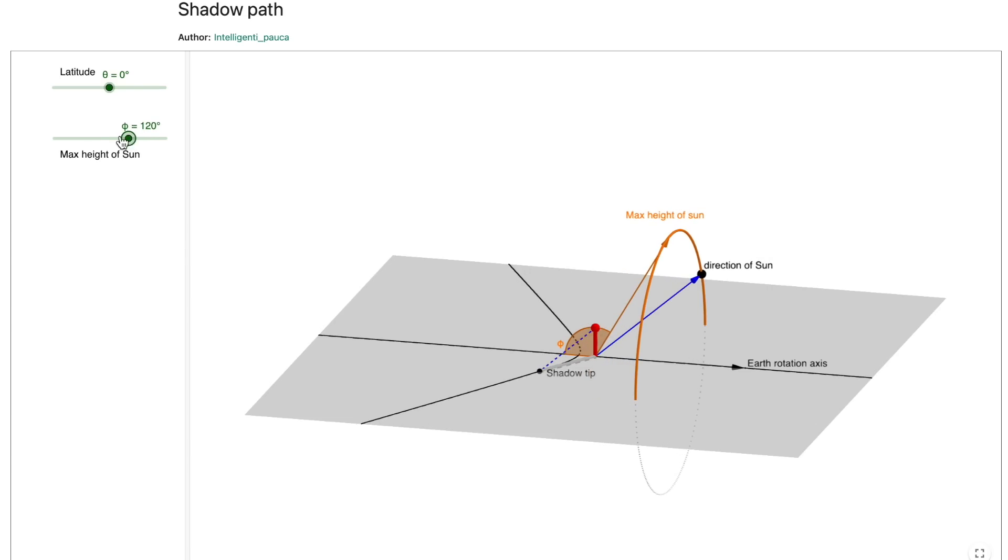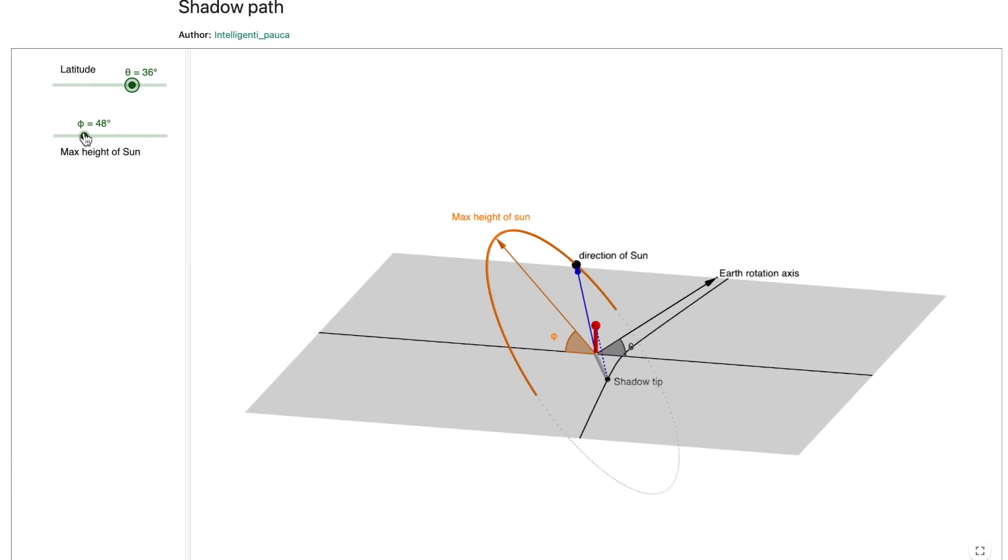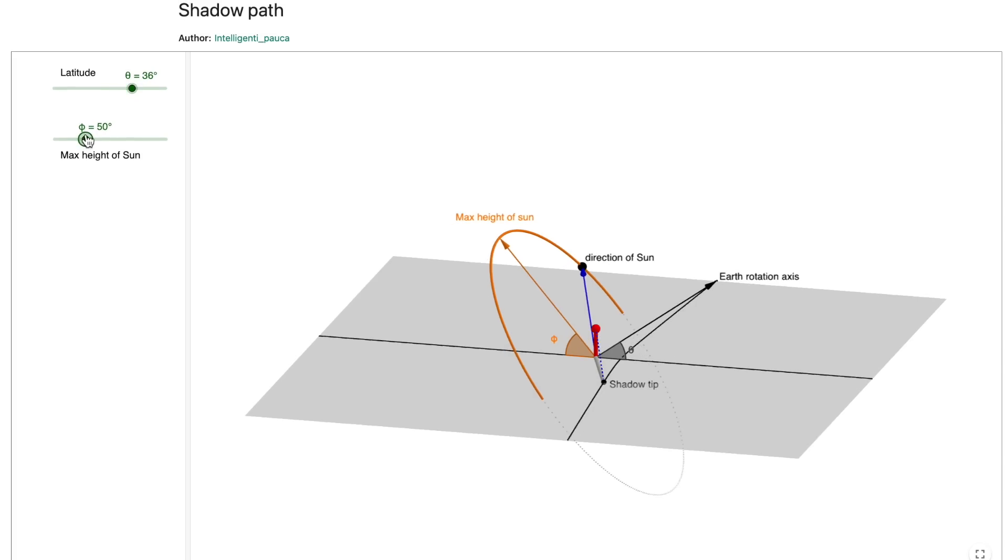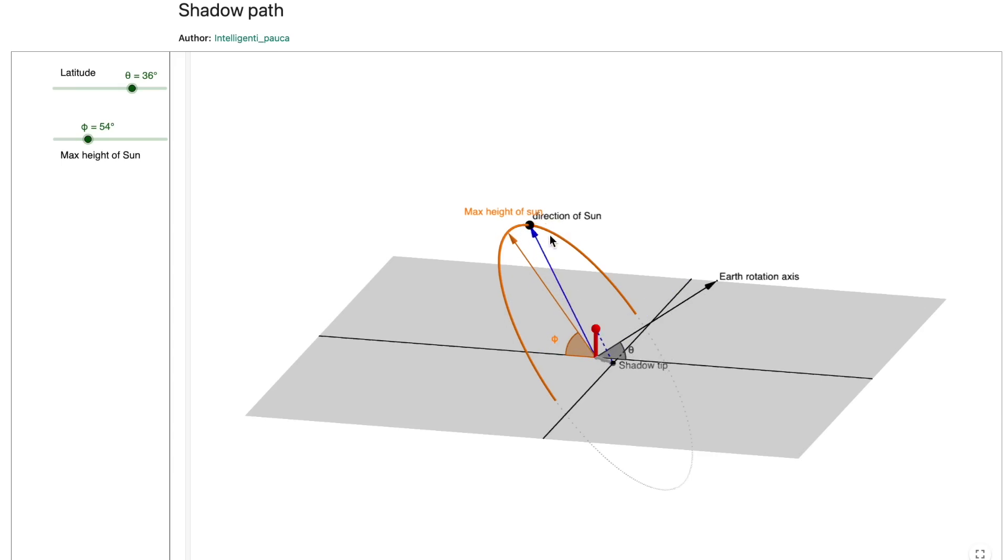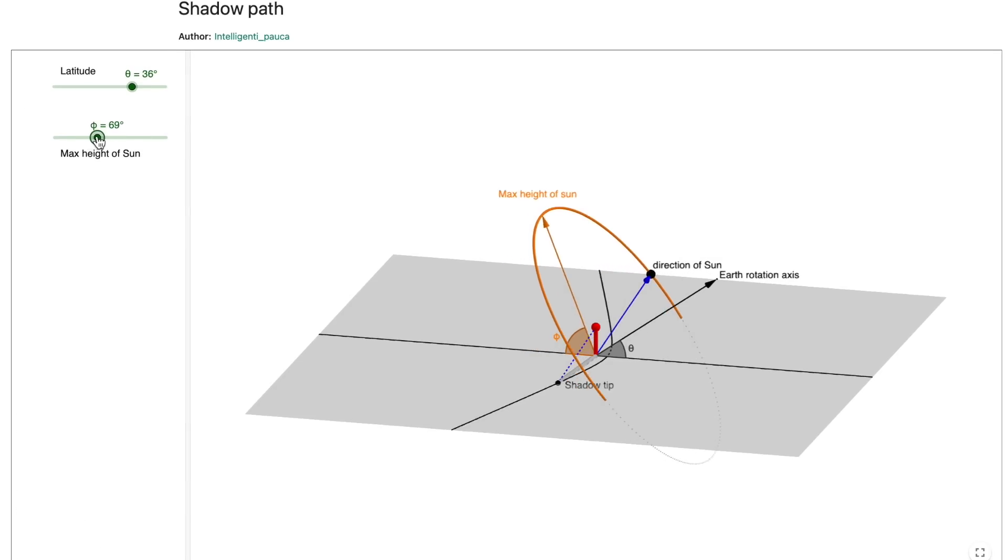In fact, no matter where you are on Earth, other than the poles, you'll find that on the autumn and spring equinox, the tip of the shadow will trace out a line from west to east. So that's the real answer in regards to the line. It will happen no matter where you are on Earth, except the poles, but it only happens two days a year on the autumn and spring equinox.